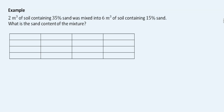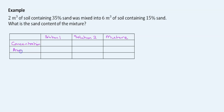In our table, we're going to have Solution 1, Solution 2, and Mixture as our rows. For columns, we'll have Concentration, Amount, and Multiply (which is the product of concentration times amount). The concentration for Solution 1 is 35% — converting to decimal that's 0.35. The amount is 2 cubic meters.